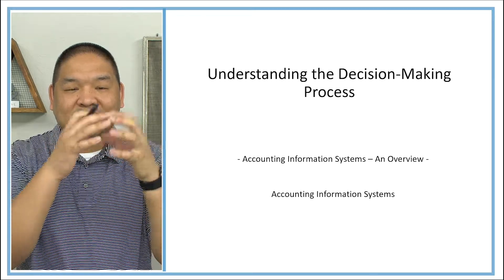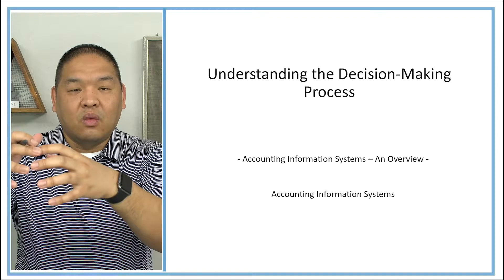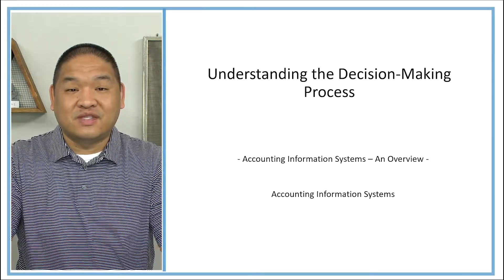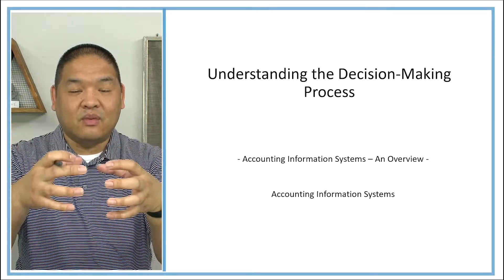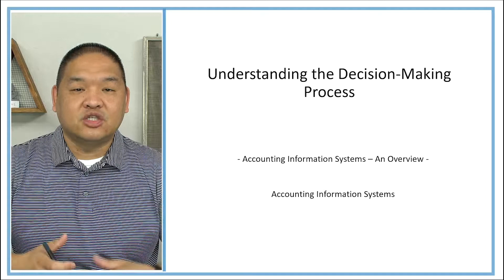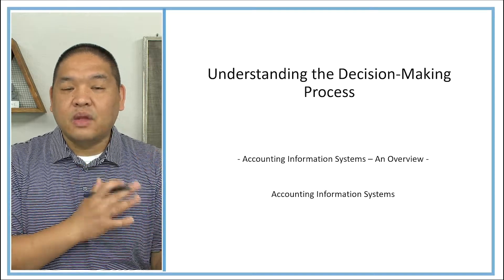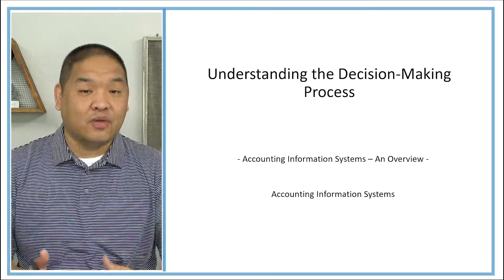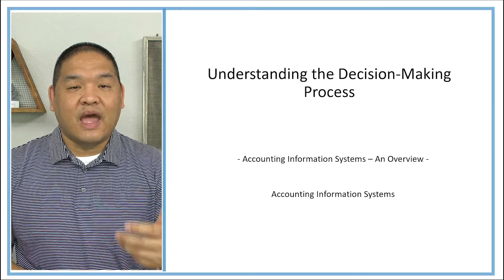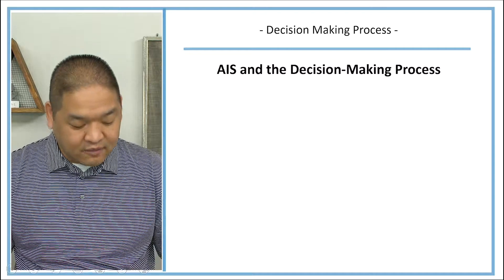Students sometimes ask about the silo effect — where accountants do this and managers do that. How come we aren't at the table with the manager? And we are, but we have distinct roles. Nowadays we've started to blend those roles where accountants are at the table with managers. But just to keep it separate here, we're talking about the decision making process from a manager's perspective, and this is going to help us understand how we provide information to them and how they interpret that information to make decisions.